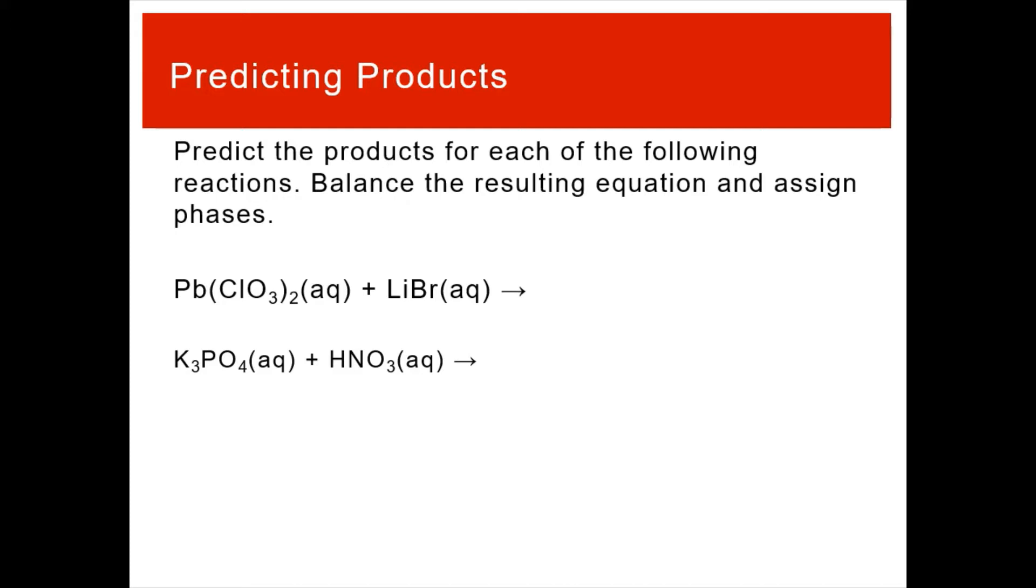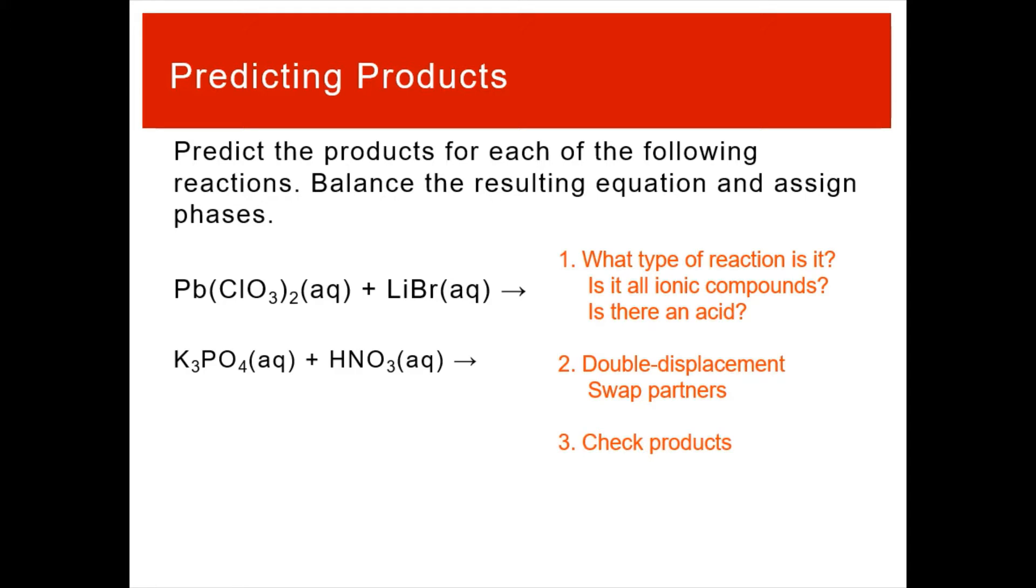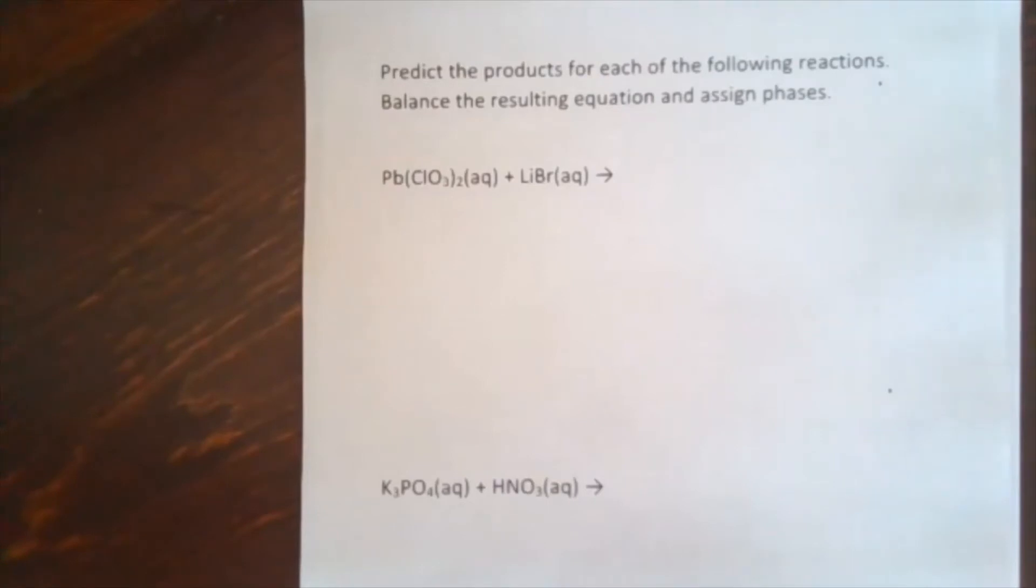So let's look at some examples. We're going to predict the products for two reactions. I have lead(II) chlorate plus lithium bromide makes what? And then potassium phosphate plus nitric acid makes what? So we want a chemical equation. We're given the reactants here. So it's going to be a question of what type of reaction is it? Are they all ionic compounds? Is there an acid? If you're predicting products, it has to follow a double displacement. It's just a question of what is involved. So do your double displacement and swap partners. Then check your products. Is it insoluble?